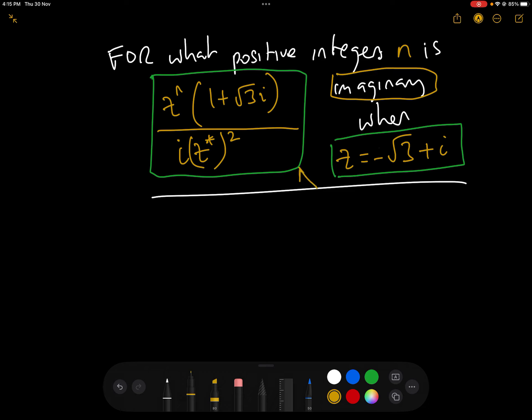So what they are actually saying is, when does this expression, when we evaluate it, appear on the imaginary line? When is the argument of the expression pi over 2, or 3 pi over 2, or 5 pi over 2, or basically 2k plus 1 pi over 2. So we want the argument of the expression to equal 2k plus 1 pi over 2.